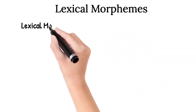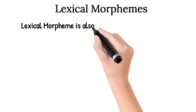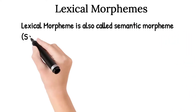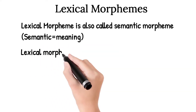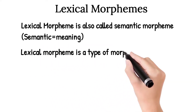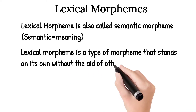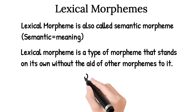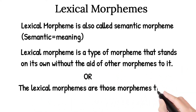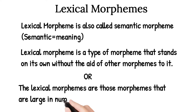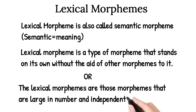Lexical morphemes are also called semantic morphemes. The word semantic means meaning. Lexical morphemes are a type of morpheme that stand on their own without the aid of other morphemes. Lexical morphemes are those morphemes that are large in number and independently meaningful.